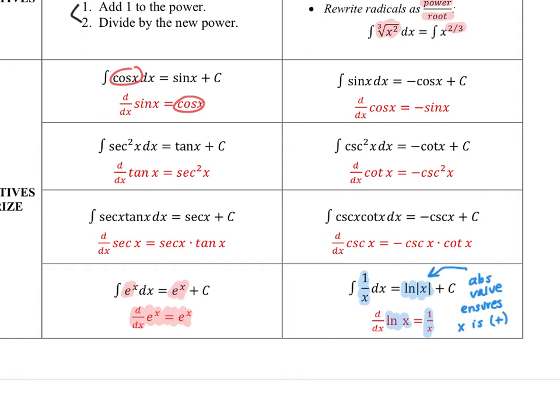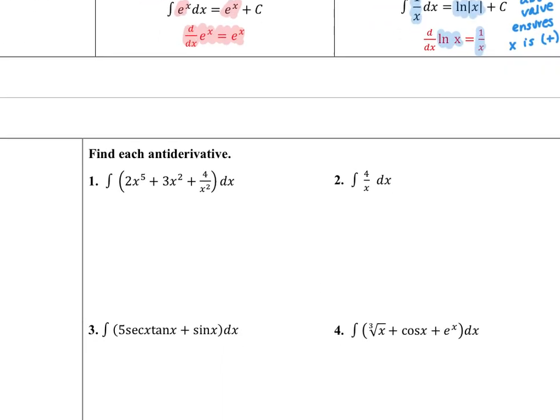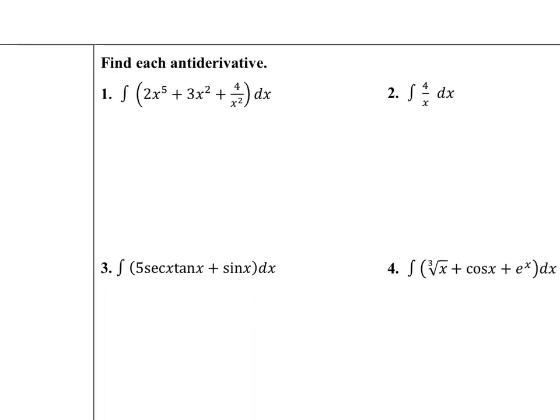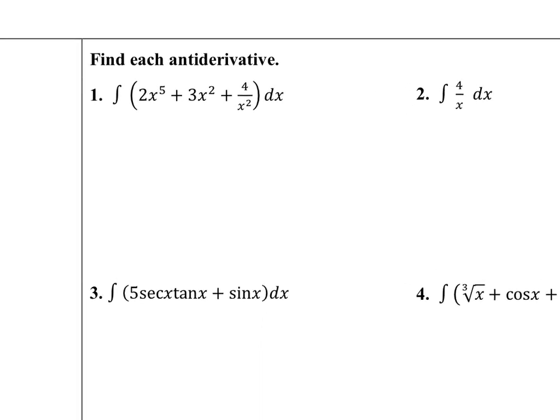You will have to memorize all of these antiderivatives. But if you have the derivatives memorized — and you did back in the day — then it's just working them backwards. Let's take a look at a few examples. The first: the antiderivative of 2x to the fifth plus 3x squared plus 4 over x squared dx.